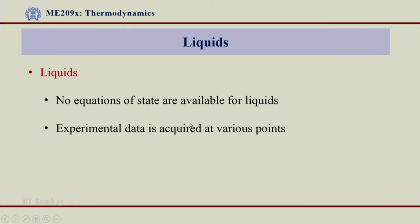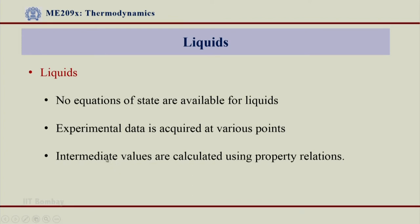For example, for water I may conduct experiments at 0°C, 100°C, and other important temperatures and pressures such as 1 bar, atmospheric pressure, 10 bar, etc., and acquire property data at those points. Once I get those data points, I can obtain intermediate values using property relations — in thermodynamics we have Maxwell property relations, for example. Using such relations along with this experimental data, I can get approximate data for other points by interpolation. The more experiments I do, the more data I get, but I cannot experiment at every point. The important difference is that for liquids I must conduct many experiments to get realistic data, while for gases I have equations of state.